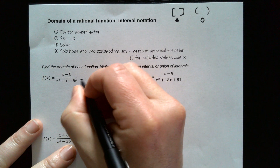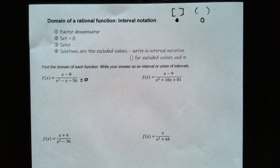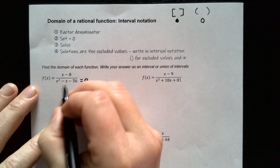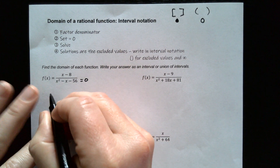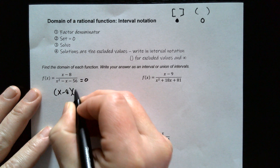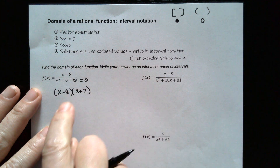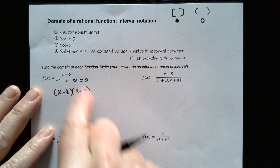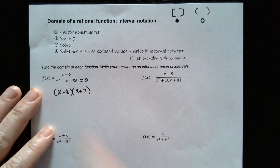We'll factor this. We need two numbers that multiply to give negative 56 but add to get negative one — that's the number in the middle. So that's going to be (x minus 8) and (x plus 7), because when you multiply those two together you get negative 56, and when you add them together you get negative one.